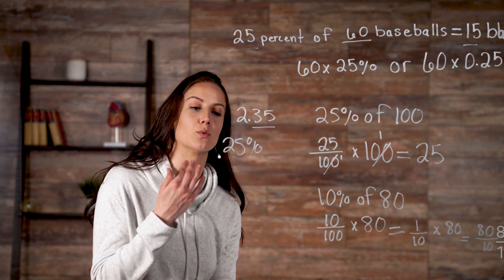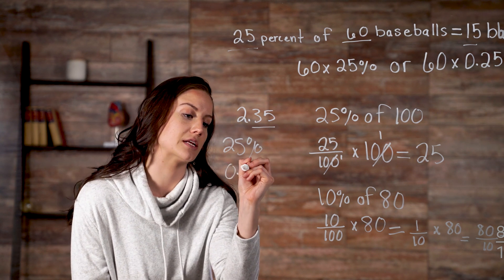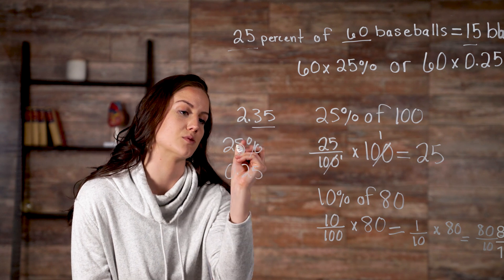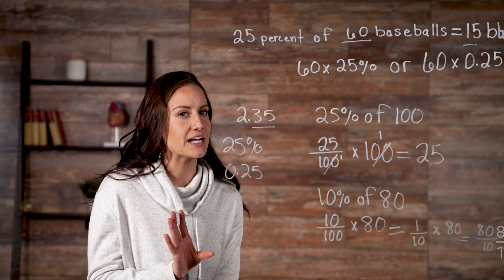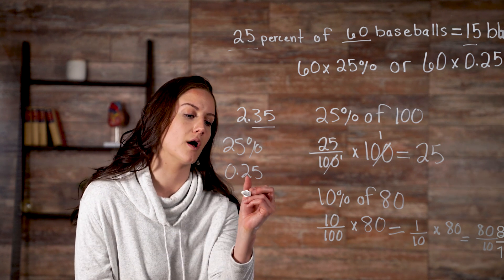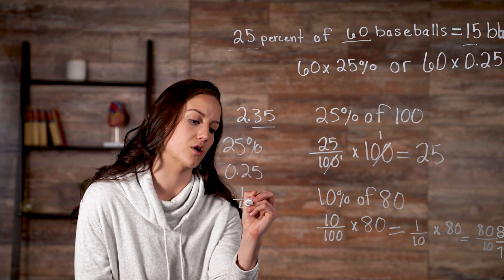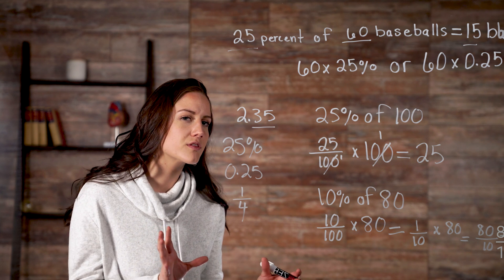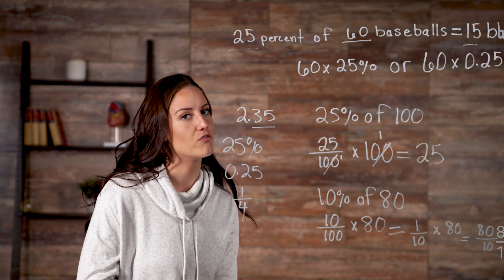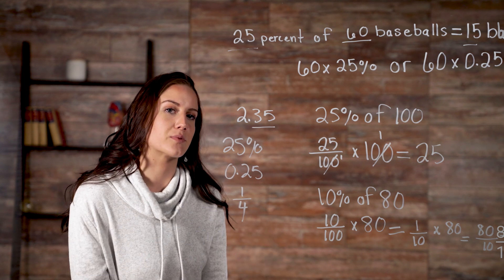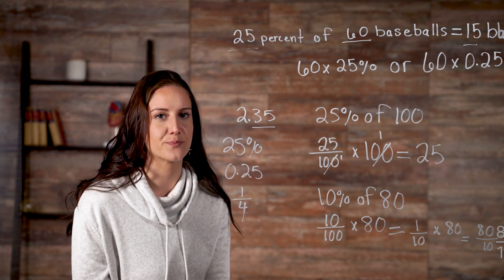When using a decimal, you would write 0.25, because you move the decimal to the left two places. And if you're writing as a fraction, you write 1 over 4. Why 1 fourth? Because 25 goes into 100 four times. So that's our look at percentages and how to use them.